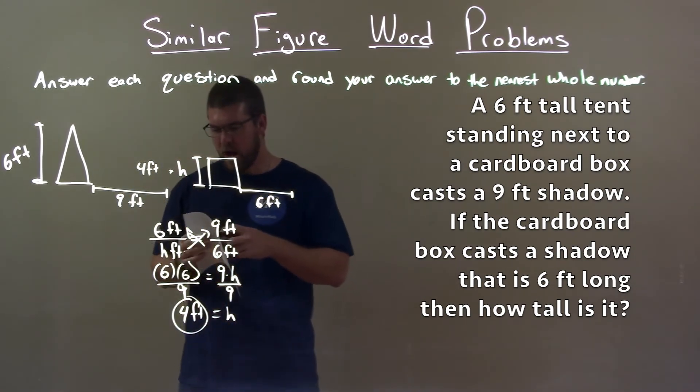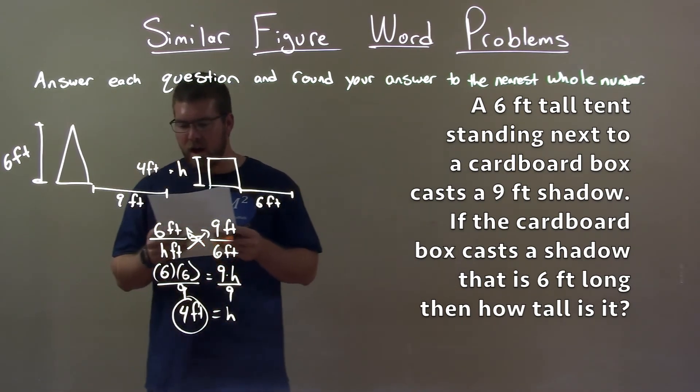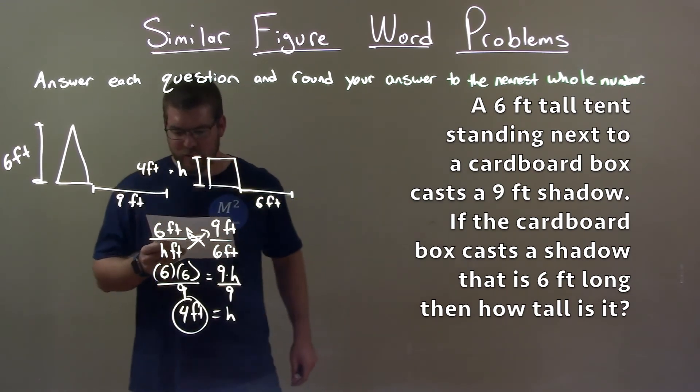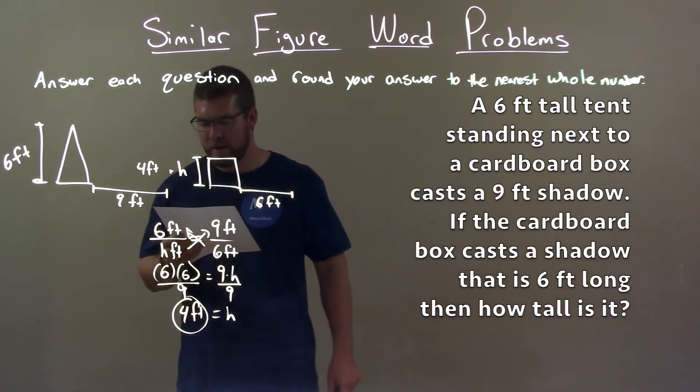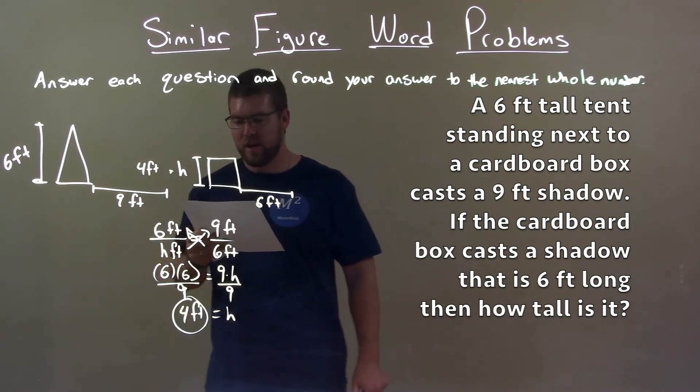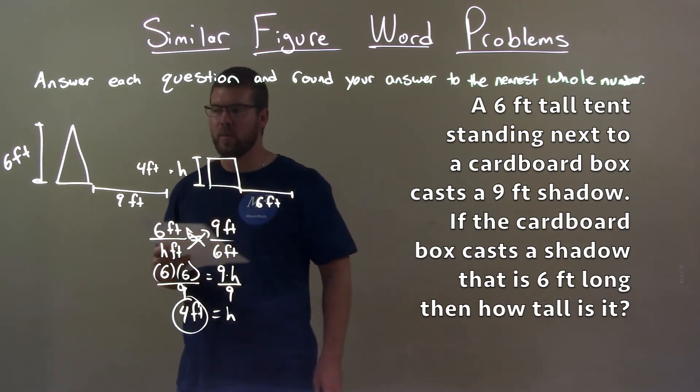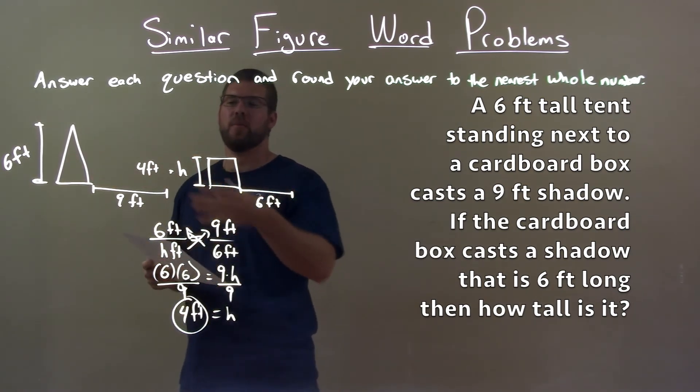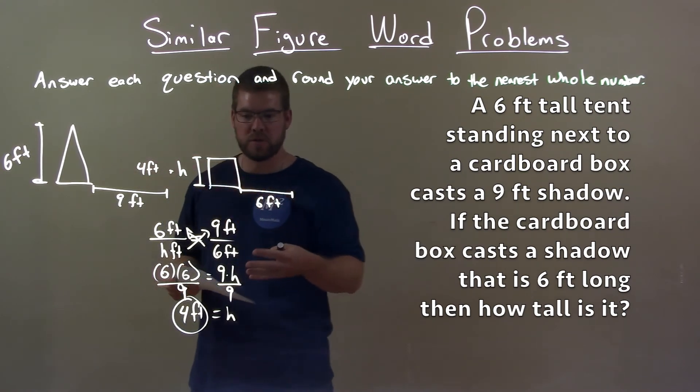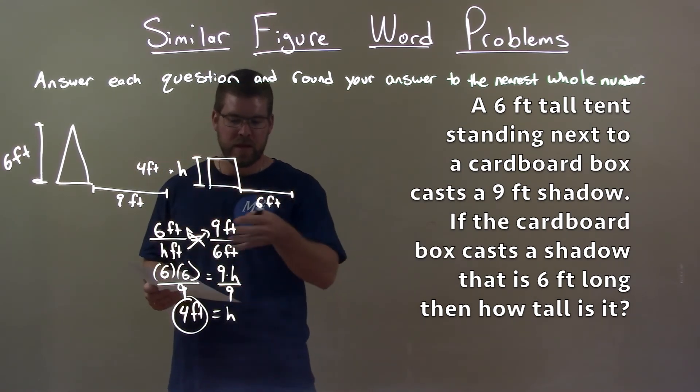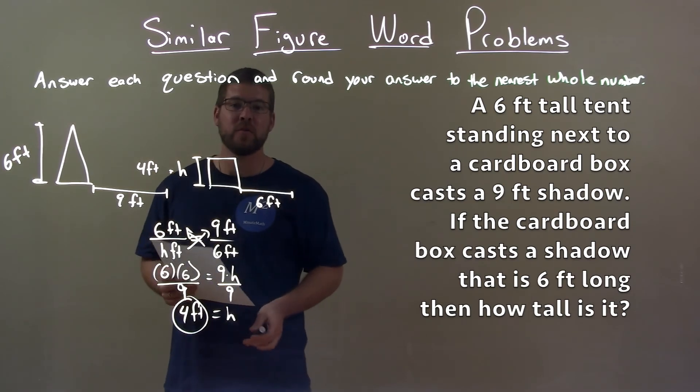So quick recap. We're given the problem: a six foot tall tent standing next to a cardboard box casts a nine foot shadow. If a cardboard box casts a shadow that is six feet long, then how tall is it? Well, we set up a picture diagram here and saw that this was a proportion. Then with that proportion there, we solved for a missing variable. And that answer came out to be four feet.